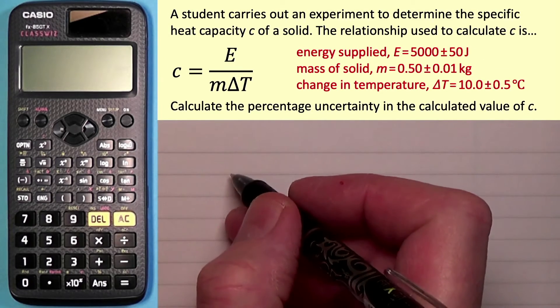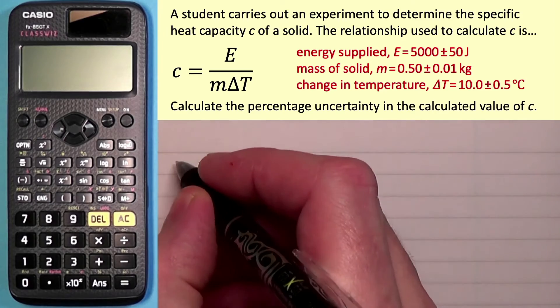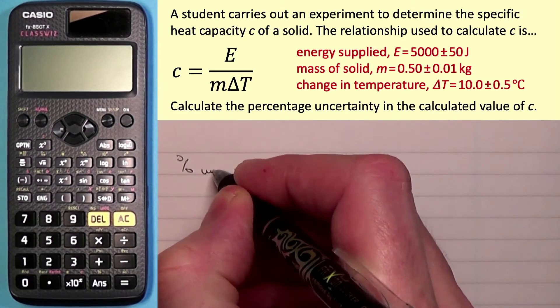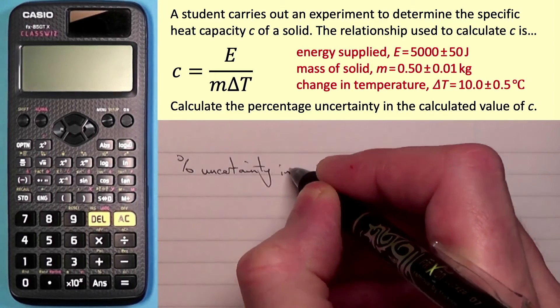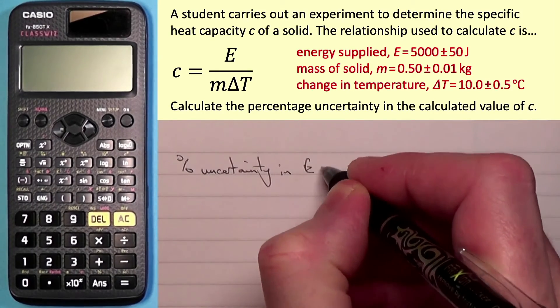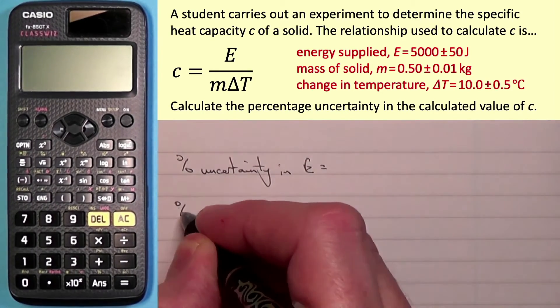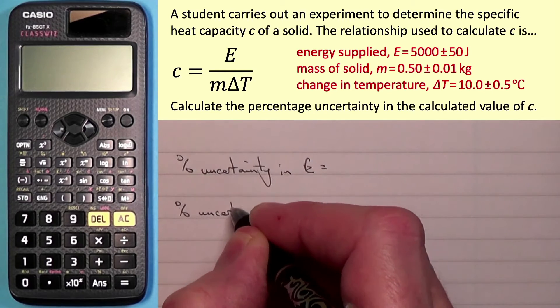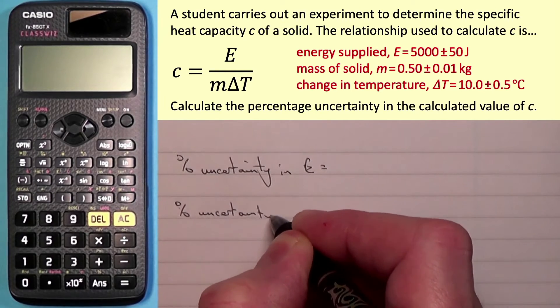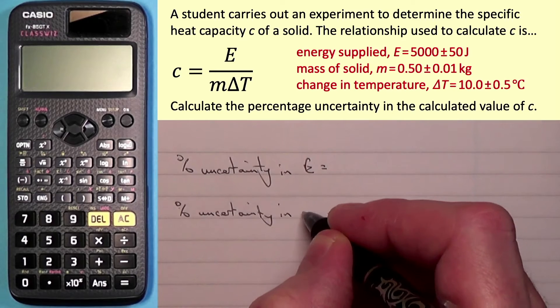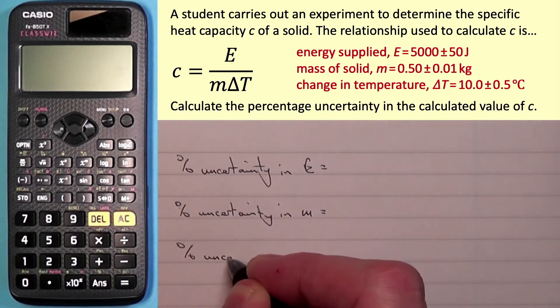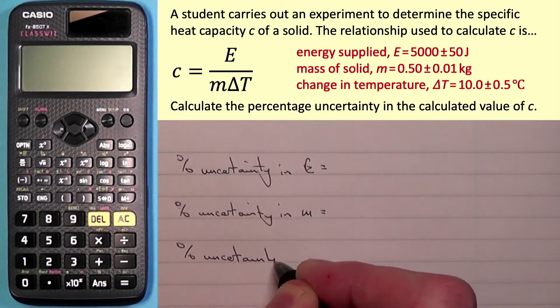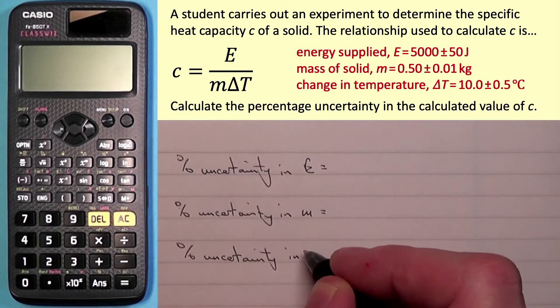So I'll work out the percentage uncertainty in E, then the percentage uncertainty in M, and then the percentage uncertainty in delta T.